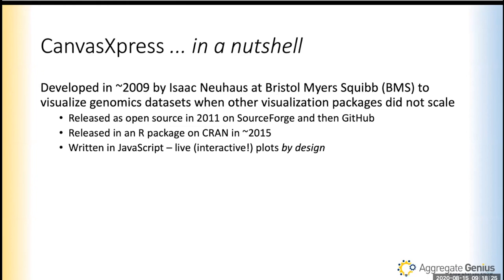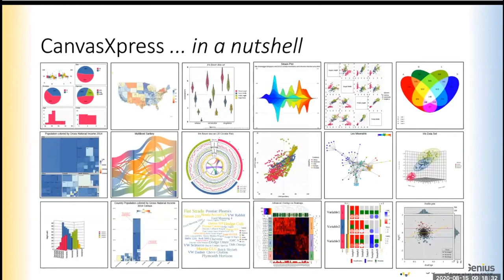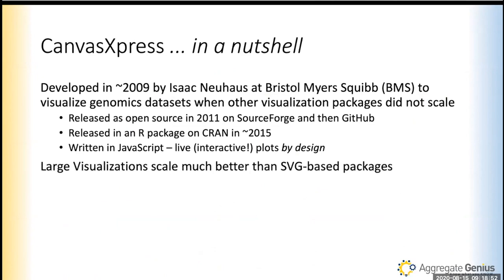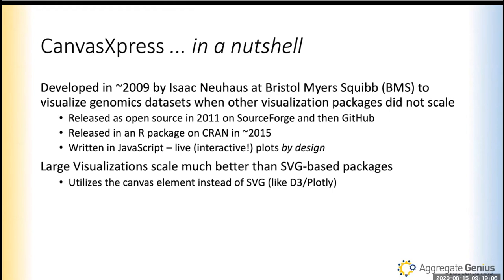The core of the Canvas Express package is written in JavaScript. The package gives you live plots by design — it wants the user to interact with the plots once you make them. It is not a charting package where you make a static chart and show it to the user. You send the data to the webpage and it builds the chart, and then it can do a lot of things on that chart that you don't have to write as a developer.